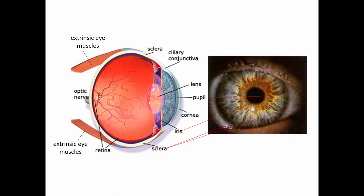The lens's job is to bend the light so that it comes to a focal point to focus the image on the back of the eyeball. On the back of the eyeball, that membrane contains photoreceptors — special receptors that respond to and get excited by light. When light hits them, they get excited and generate action potentials. The axons from all these receptors come together and leave the eyeball in a big nerve called the optic nerve, which heads back towards the visual cortex.